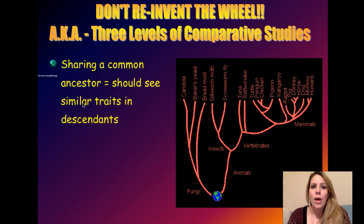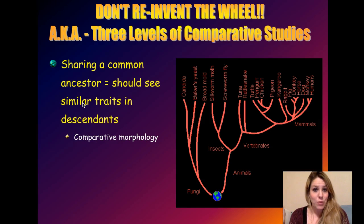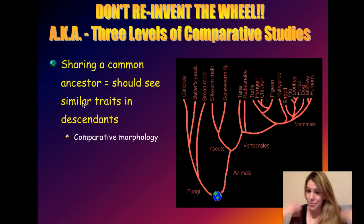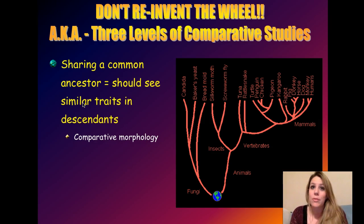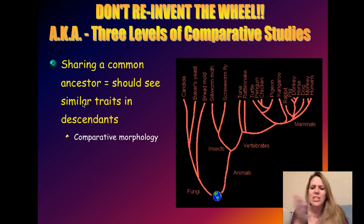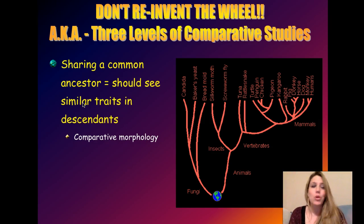We're going to be looking at comparative morphology — where we look at the body structures of different organisms within groups and see how there's so much evidence that they evolved from a common ancestor. Morphology means body type. If you ever take a comparative vertebrate evolution course, it is the most amazing study — you can dissect species within a group and trace where tissues, bones, muscles, nerves, and every part of the body came from.